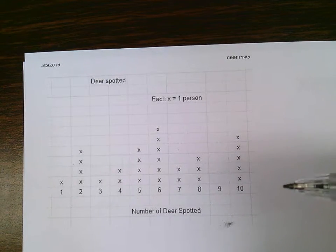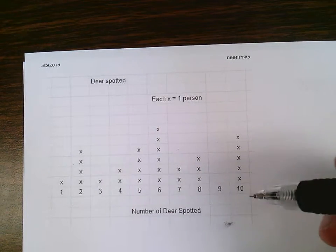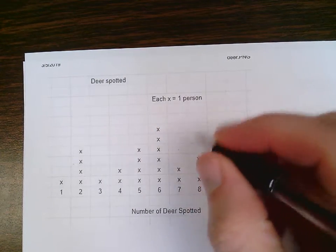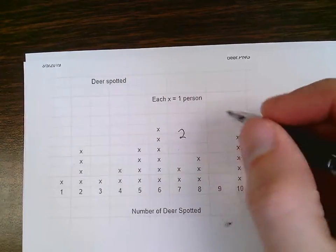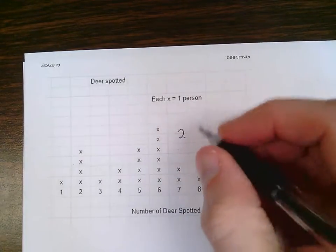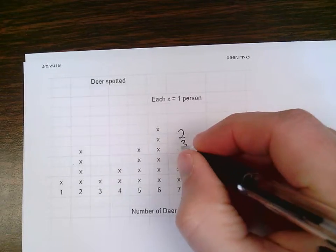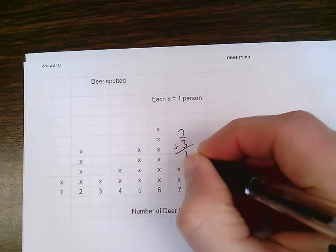So if I want to know the total number of people that saw seven and eight deer, I'd count up all the people that saw seven, which is two, and I'd add it to all the people that saw eight, which is three, and I'd add them together to get five.